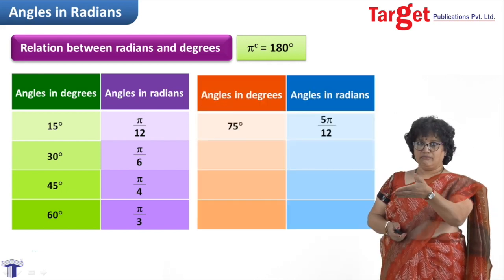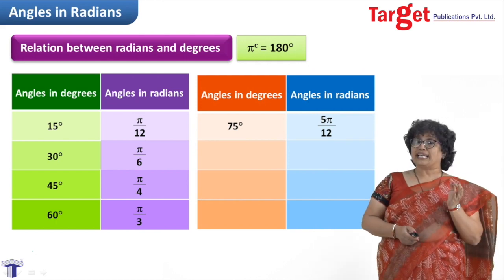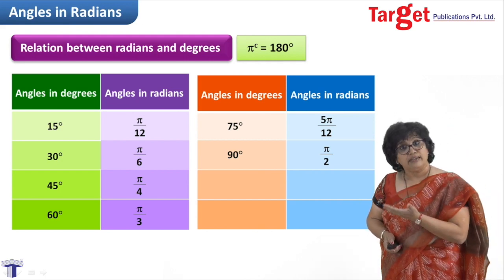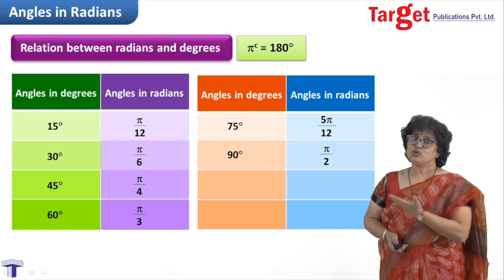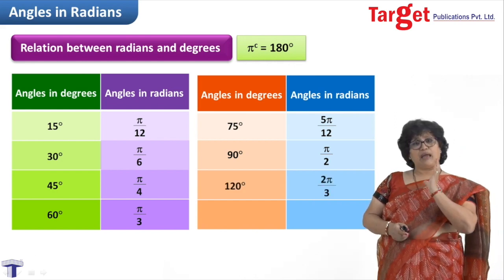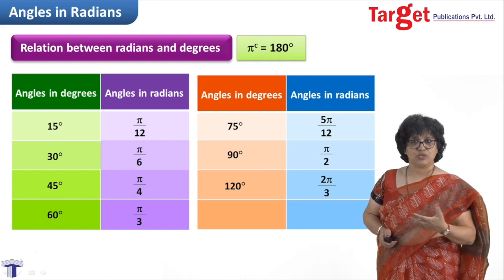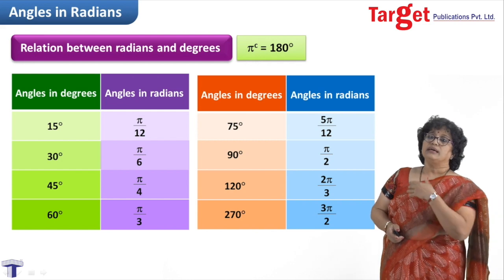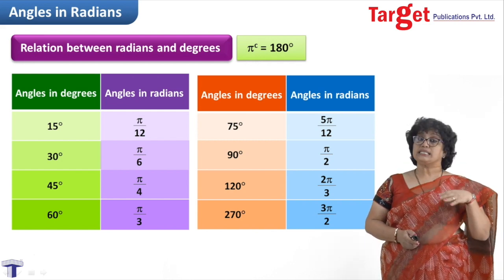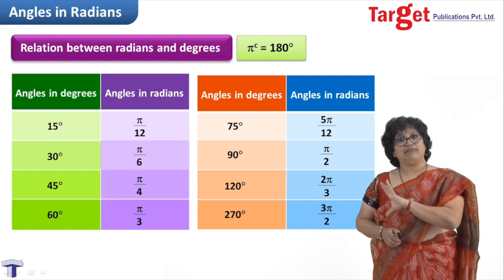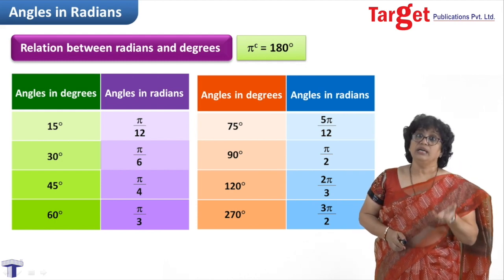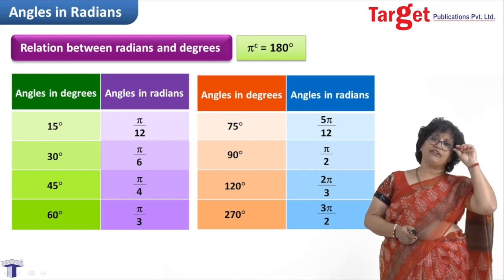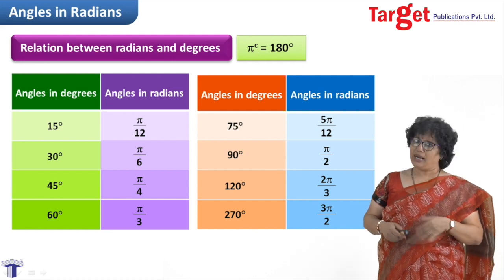Continuing with standard angles: 75 degrees is 5 times 15 degrees, so 5π/12. Then 90 degrees is half of 180 degrees, so π/2. Then 120 degrees — an angle you would use frequently — is double of 60 degrees, so 2π/3. And 270 degrees is 3 times 90 degrees, so 3π/2. I have given a table of some angles with their degree-to-radian equivalents. You can remember this table, and frankly after a few exercises you will remember them naturally.